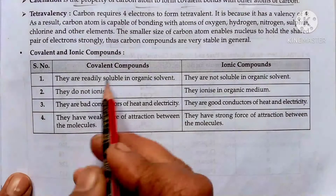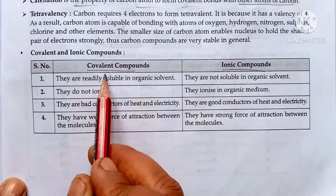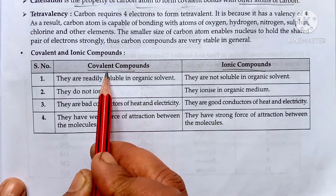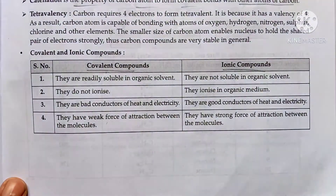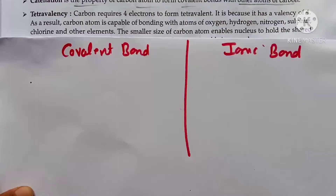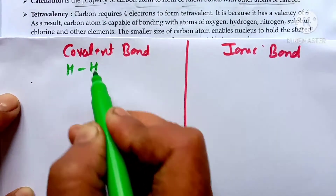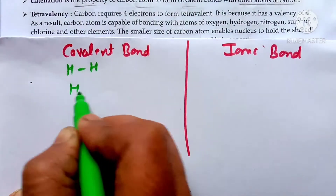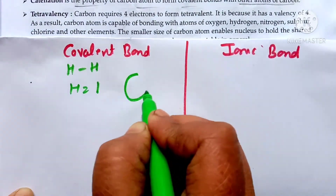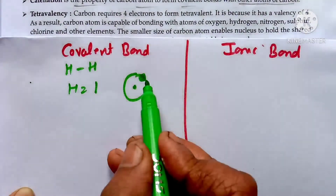Now I will discuss the difference between covalent bonding and ionic bonding. We have already made CH4 as an example of covalent bonding. Let me now explain covalent bonding using the H2 molecule. Hydrogen has atomic number 1, and its valence shell has only one electron.